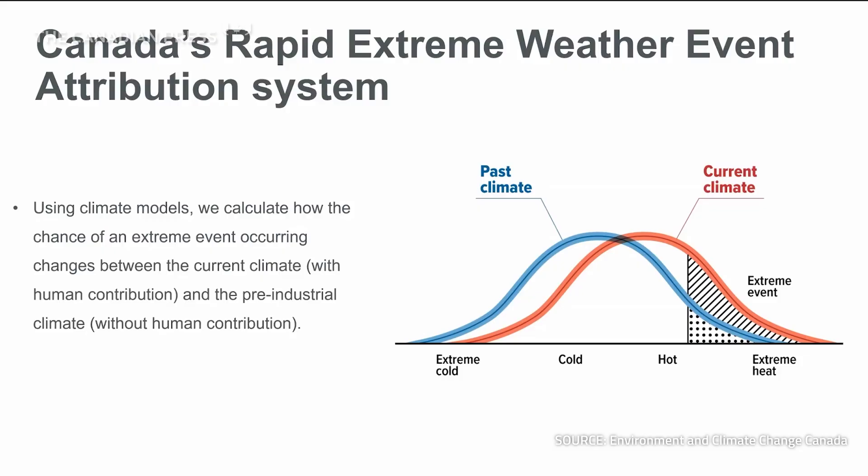Therefore, an event of a certain magnitude would happen more often in the current climate than in the pre-industrial climate, so the shaded area under the red curve is larger than the shaded area under the blue curve.